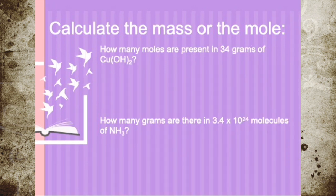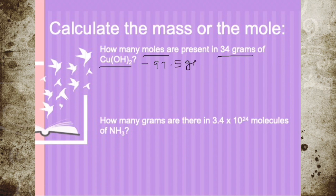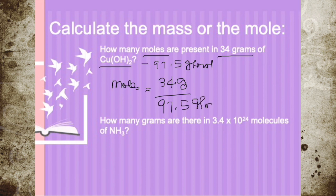The next-to-last example: how many moles are present in 34 grams of copper(II) hydroxide? Copper(II) hydroxide has a molar mass of 97.5 grams per mole, as we found previously. To find the moles: 34 grams divided by 97.5 grams per mole. Grams cancel, so 34 divided by 97.5 gives 0.35 moles.